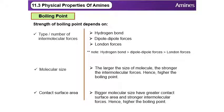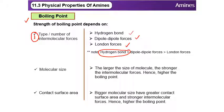Now let's discuss boiling point. The factors we always consider are, first, the type of intermolecular force. Amines can form hydrogen bonds, dipole-dipole forces, and also London forces. Among these three, hydrogen bond is the strongest, so we say the type of intermolecular force for amines is the hydrogen bond.